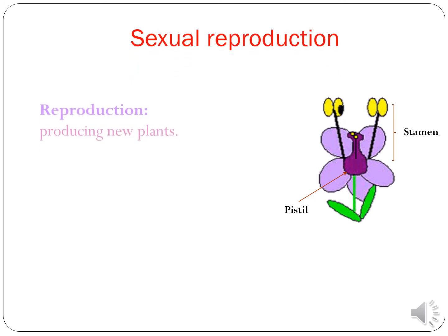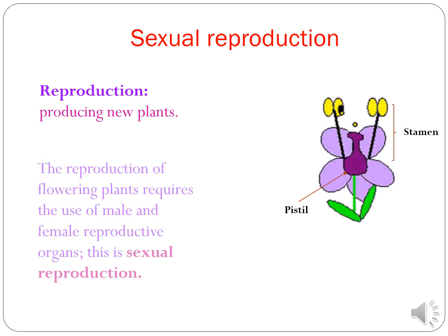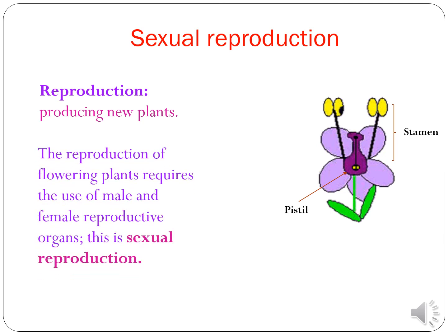Reproduction means producing new plants. When reproduction requires the use of male and female reproductive organs, this is called sexual reproduction. When producing new plants requires the use of the stamen, which is the male reproductive organ, and the pistil, which is the female reproductive organ, we call the mode of reproduction sexual reproduction.